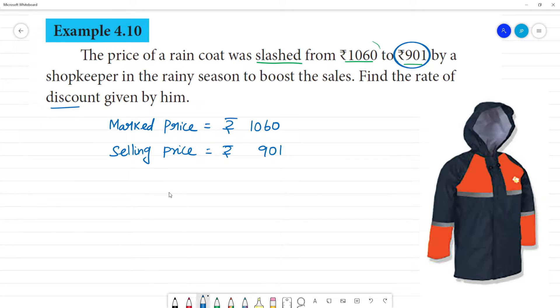Find the rate of the discount given by him. What is discount? Discount is equal to marked price minus selling price. Marked price is how much? 1060 minus what is the selling price? 901. If we subtract 1060, 10 minus 1 is 9. So what is the discount? That is rupees 159 is the discount.